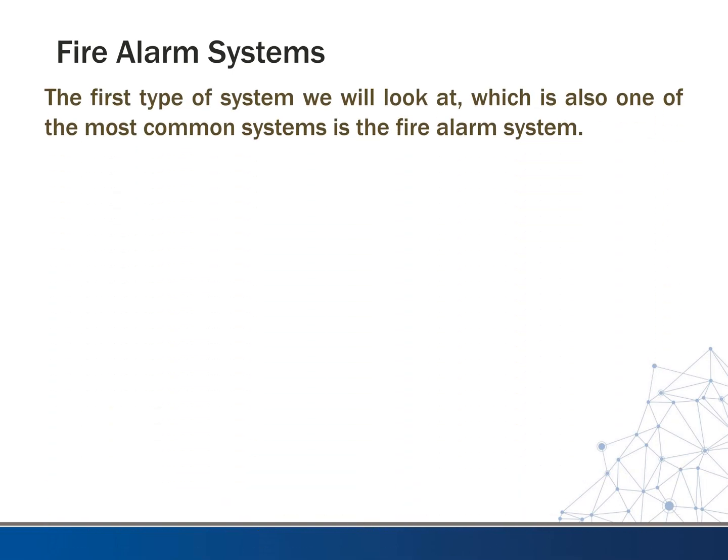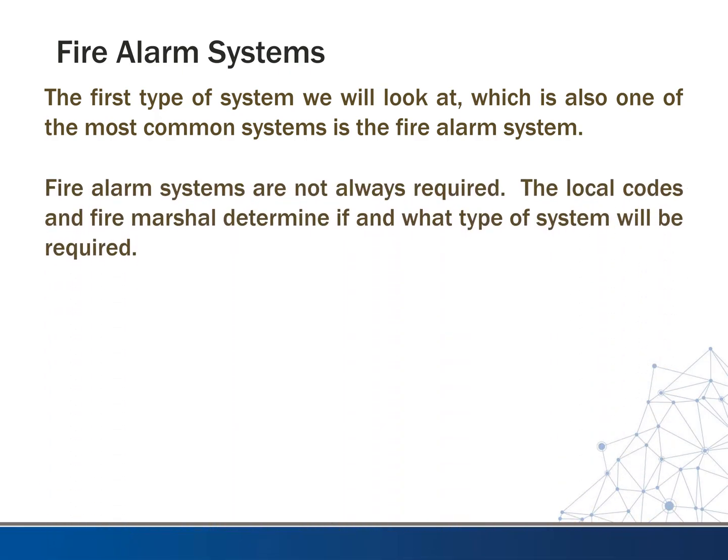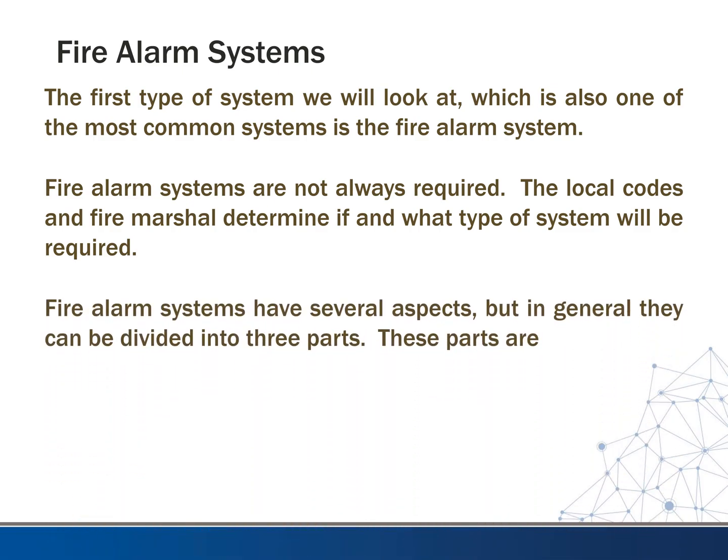The first type of communication system we want to look at is probably the most common of all: the fire alarm system. Fire alarm systems are not always required. The local codes and the fire marshal are going to determine that, and they have ultimate authority on what has to be done, how they want to see it perform, and what type of system it is.